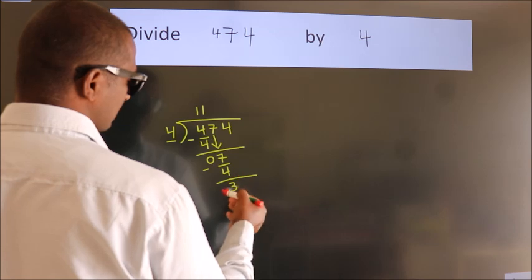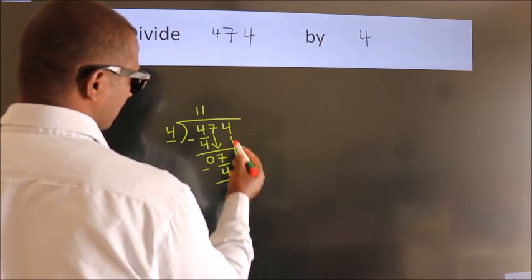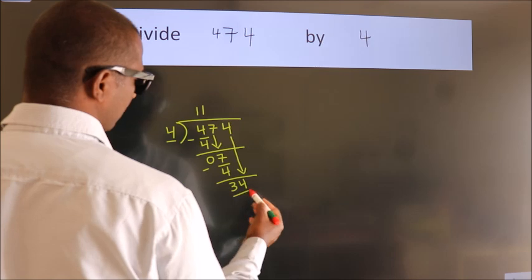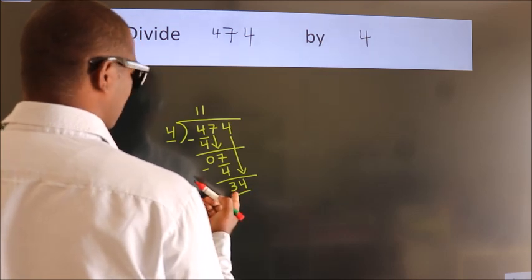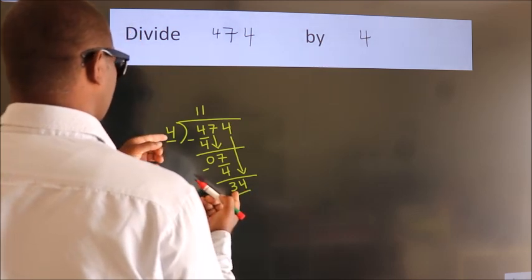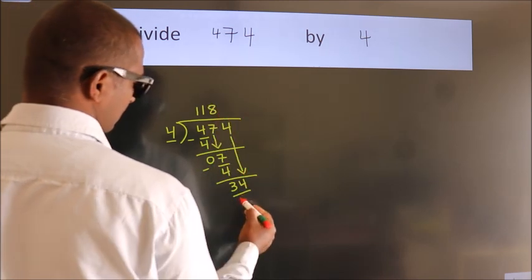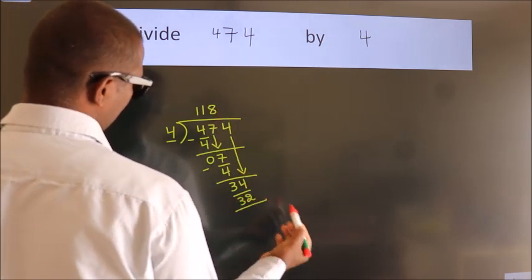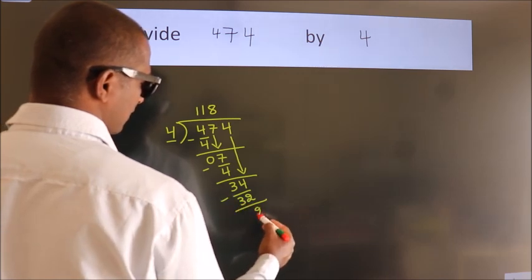After this, bring down the beside number. So 4 comes down, giving us 34. A number close to 34 in the 4 table is 4 eights, which is 32. Now we subtract, we get 2.